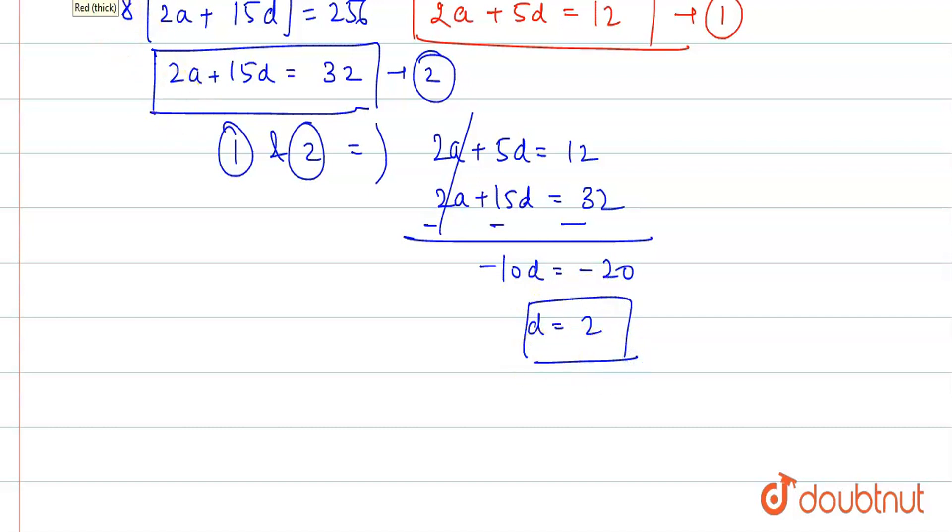We have d equals 2. If d equals 2 and we keep the value of d in equation 1, then 2a plus 10 equals 12. 2a equals 2. That means a equals 1.